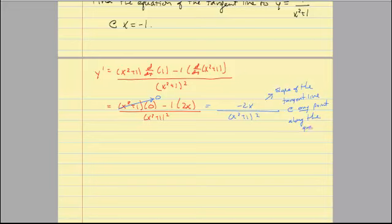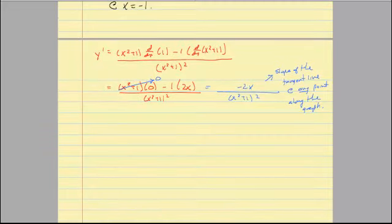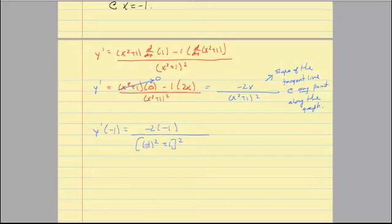We want the slope at a particular point, so let's evaluate Y prime at negative 1. Everywhere there's an X we plug in negative 1. Be careful because we're squaring the negative: negative times negative gives positive 2 in the numerator. In the denominator, (negative 1) squared is 1, and 1 plus 1 is 2, so 2 squared is 4. That gives 2 over 4, which is 1/2 — the slope of the tangent line at X equal negative 1.